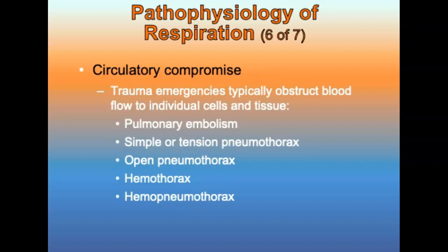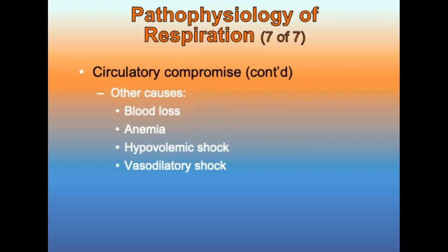Circulatory compromise: obstruction of blood flow to individual cells and tissues is typically related to trauma injuries and emergencies, such as pulmonary emboli, simple or tension pneumothorax, open pneumothorax (sucking chest wound), hemothorax, or hemopneumothorax. Other causes of circulatory compromise include blood loss, anemia, and hypovolemic shock — an abnormal decrease in blood vessel diameter decreasing blood pressure. Any patient suspected of being in shock should be treated aggressively to prevent further interruptions to tissue perfusion.